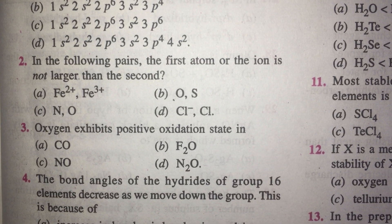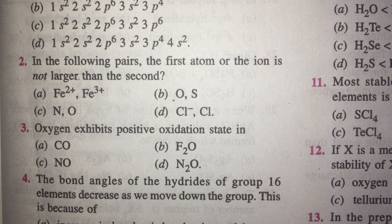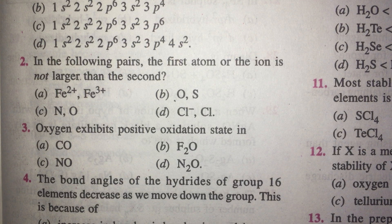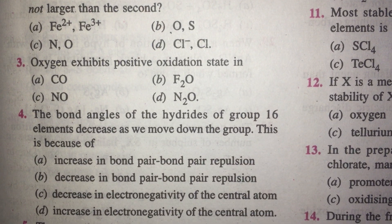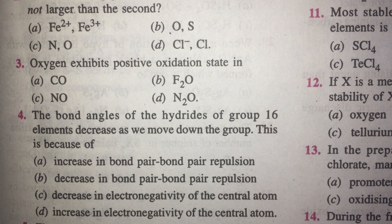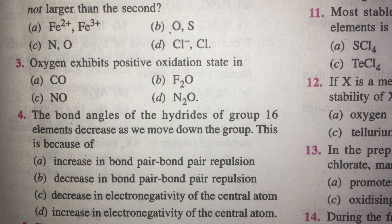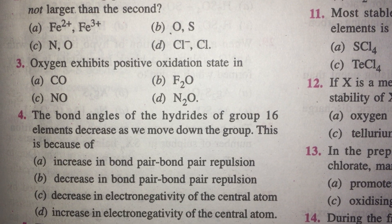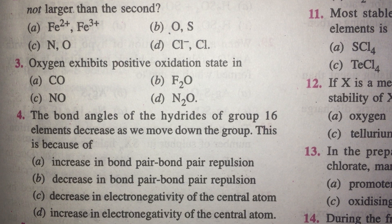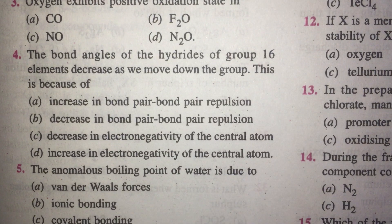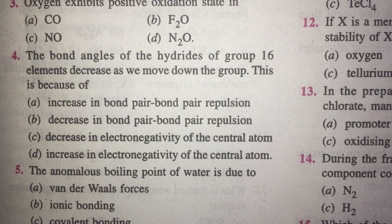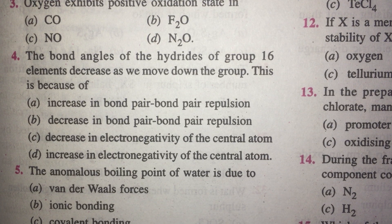The bond angle of hydrides of group 16 elements decreases as we move down the group. Option C appears to be the best answer. The size of the central atom increases and pure p-orbitals are involved in bonding as you go down — both factors decrease the bond angles. So the answer is C.